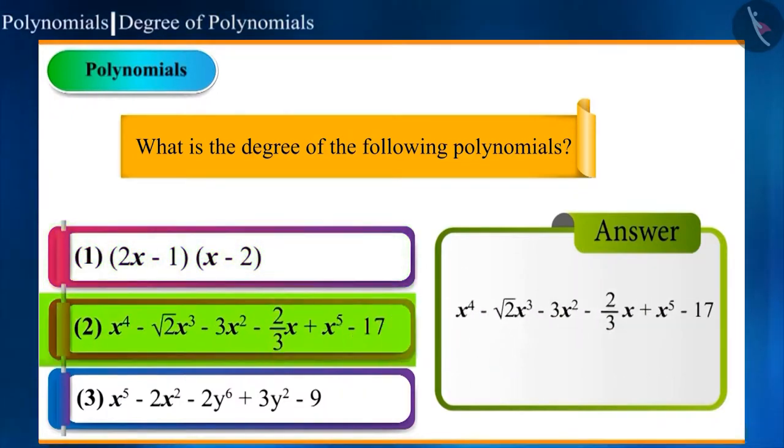Let us see the second option. The power of variable of the first term is 4, but it is not the highest. Fifth term of this polynomial is x to the power of 5, where the power of x is 5. Hence, this is a polynomial with the degree of 5. It would be better to write such polynomials in the descending order of their powers.